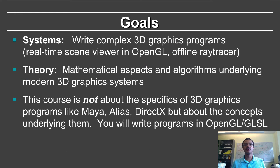The goals of the course — there are two main goals. First, you need to be able to write systems. This is really a course that teaches you how to program 3D computer graphics and write your own 3D graphics programs. You will be writing both real-time graphics programs using OpenGL and the OpenGL Shading Language, building a real-time scene viewer. You will also develop offline programs for ray tracing, which enables you to create realistic images of 3D scenes. The second goal is to understand the theory of computer graphics — the mathematical techniques and algorithms that underlie most of modern 3D graphics systems.